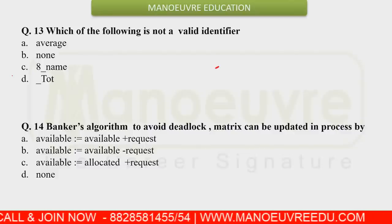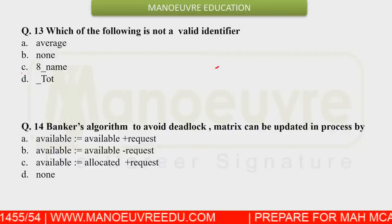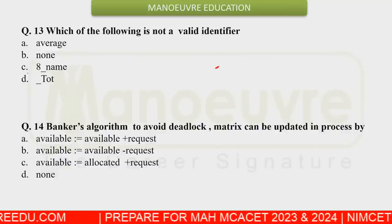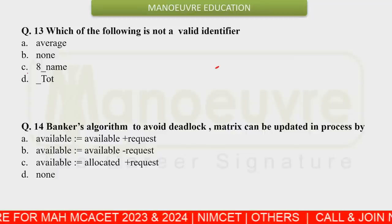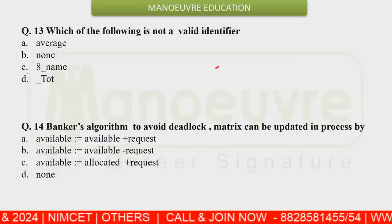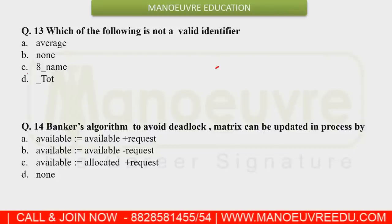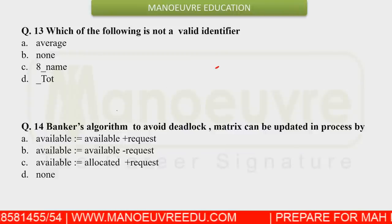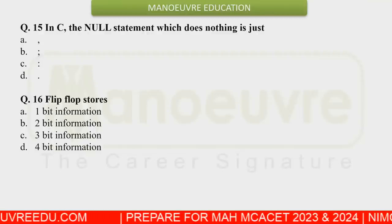Question 14 was about the Banker's Algorithm. There were at least two to three questions on Banker's Algorithm alone. Focus on operating systems — there were almost four questions from OS, including Banker's Algorithm and deadlock-related questions. Go through the Banker's Algorithm once again thoroughly.